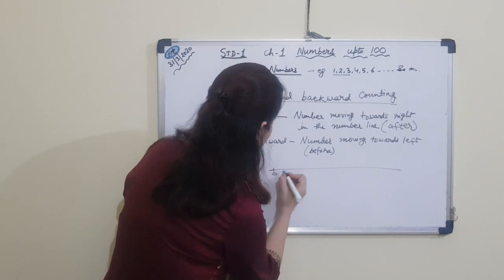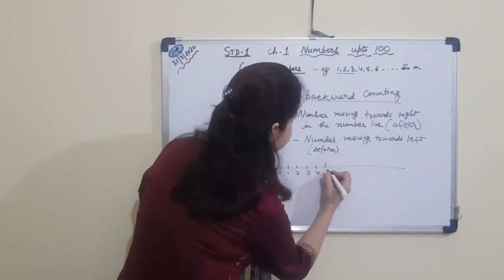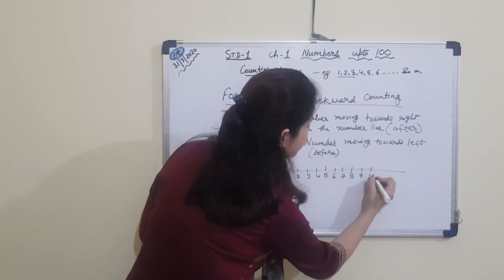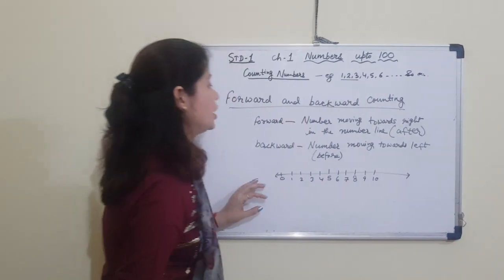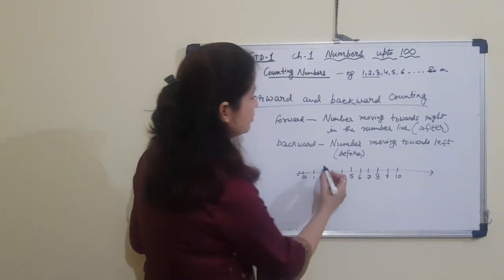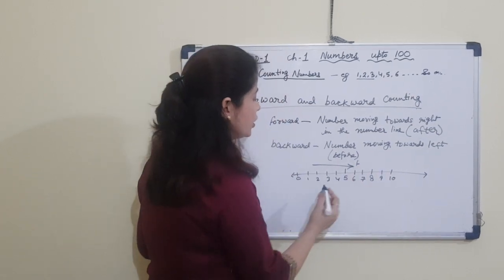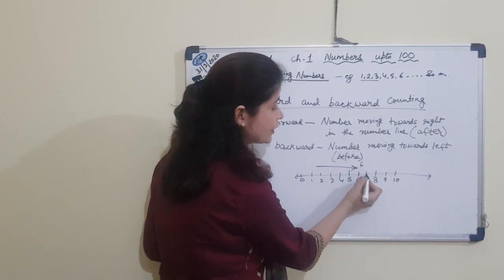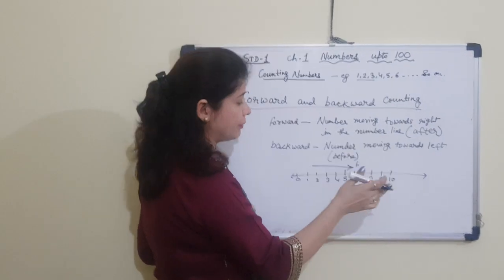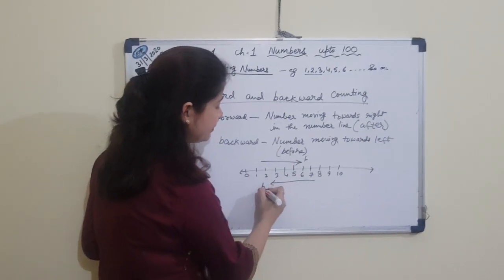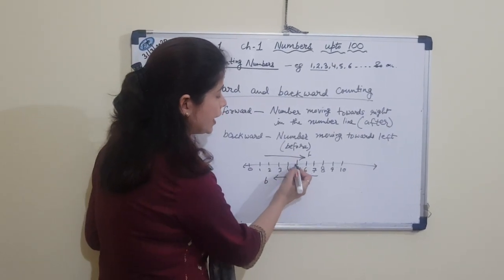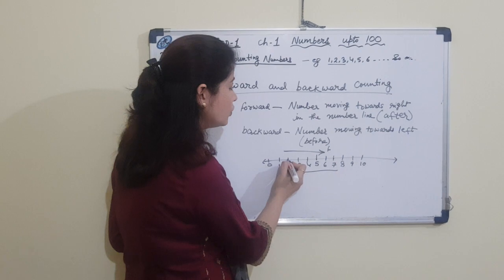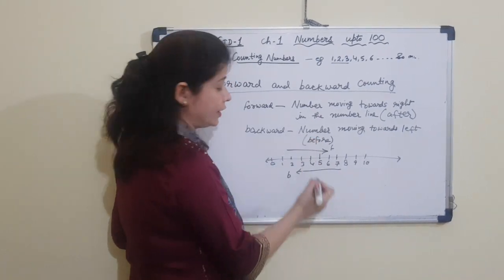Let me draw it for you again: 1, 2, 3. The number line is the only thing that helps you compare numbers every time. Moving forward means moving right: after 3 comes 4, after 4 comes 5, after 5 comes 6, after 6 comes 7. Moving backward: before 5 is 4, before 4 is 3, before 3 is 2, before 2 is 1.